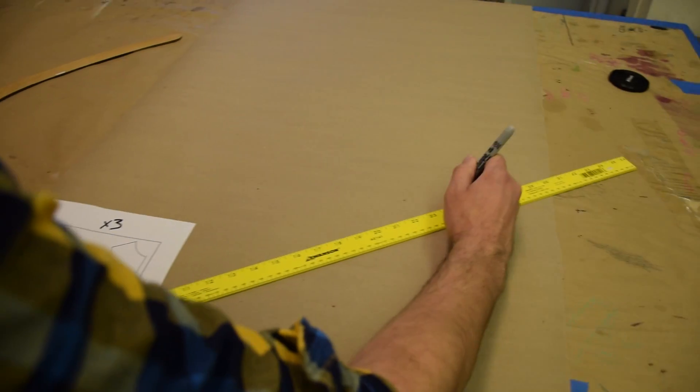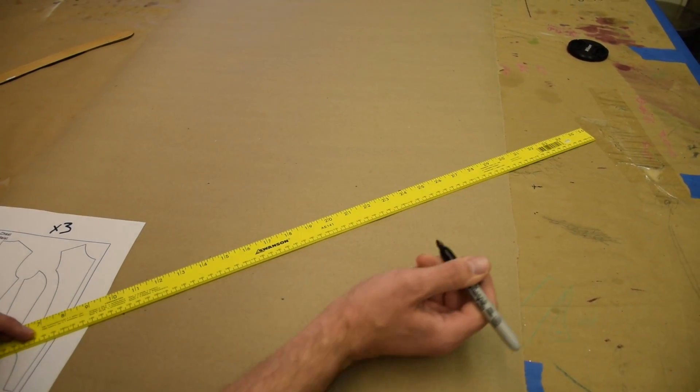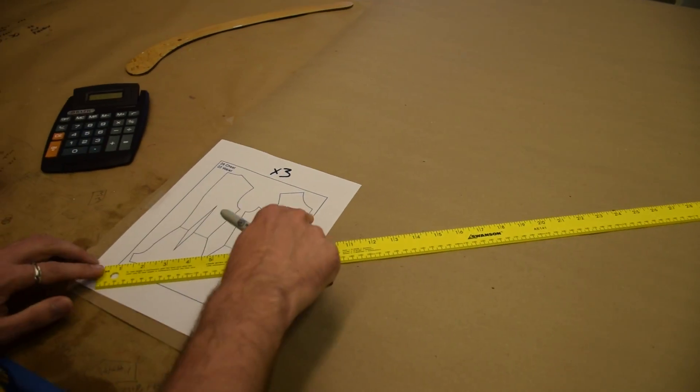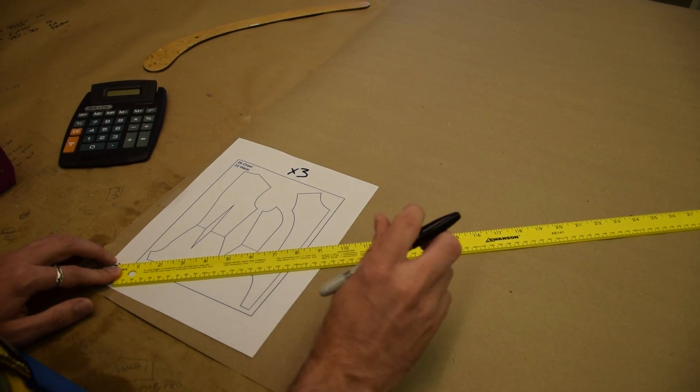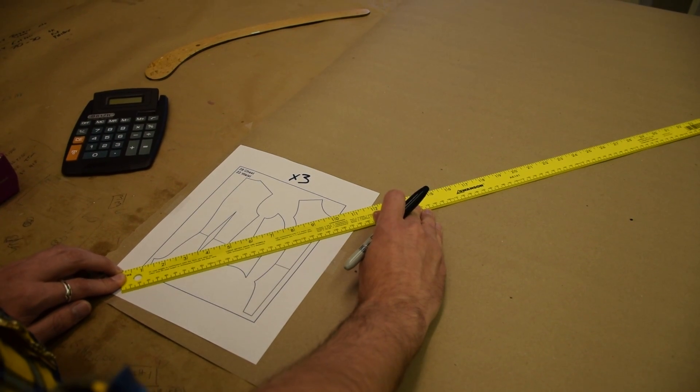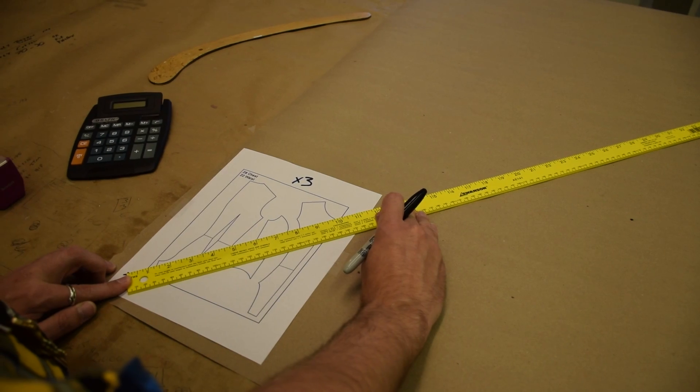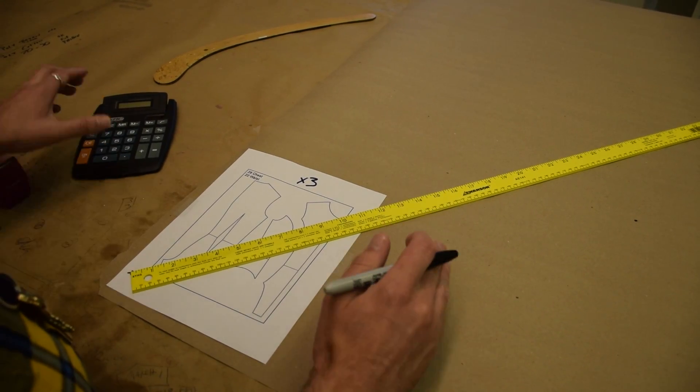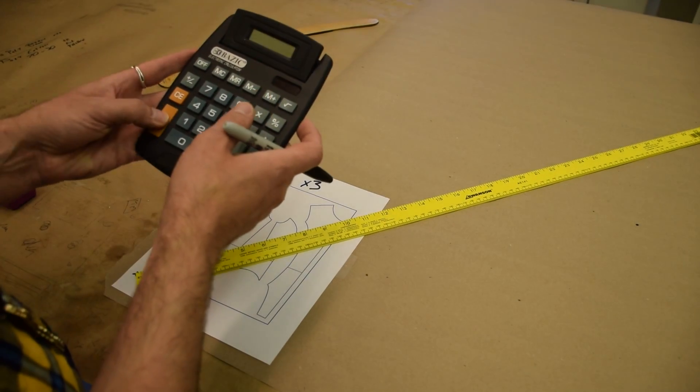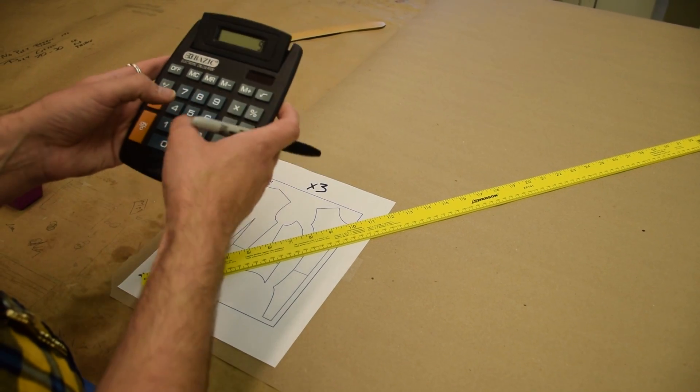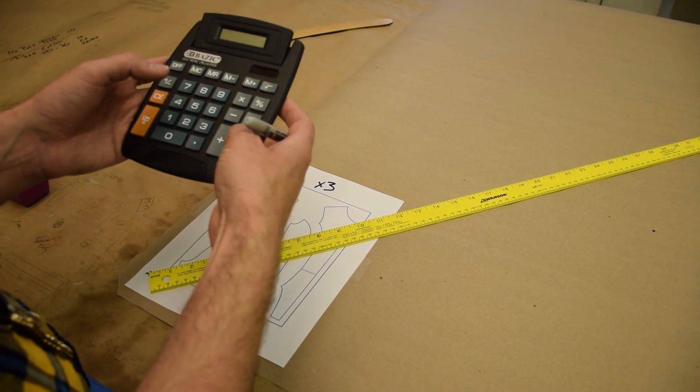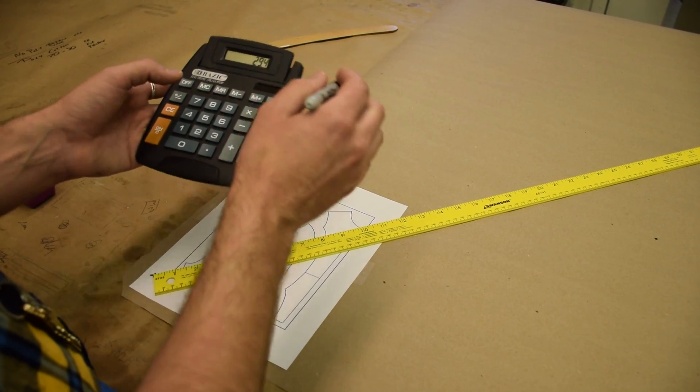So I'm going to take eight times three, which is 24, and I'm going to make a dot at 24 inches. Then we can find the top and bottom of this pattern piece. So the top of it is 9 and 7 eighths, so that's roughly 9.8 times three, 29.4, so we could round it up to 29 and a half and make a dot.